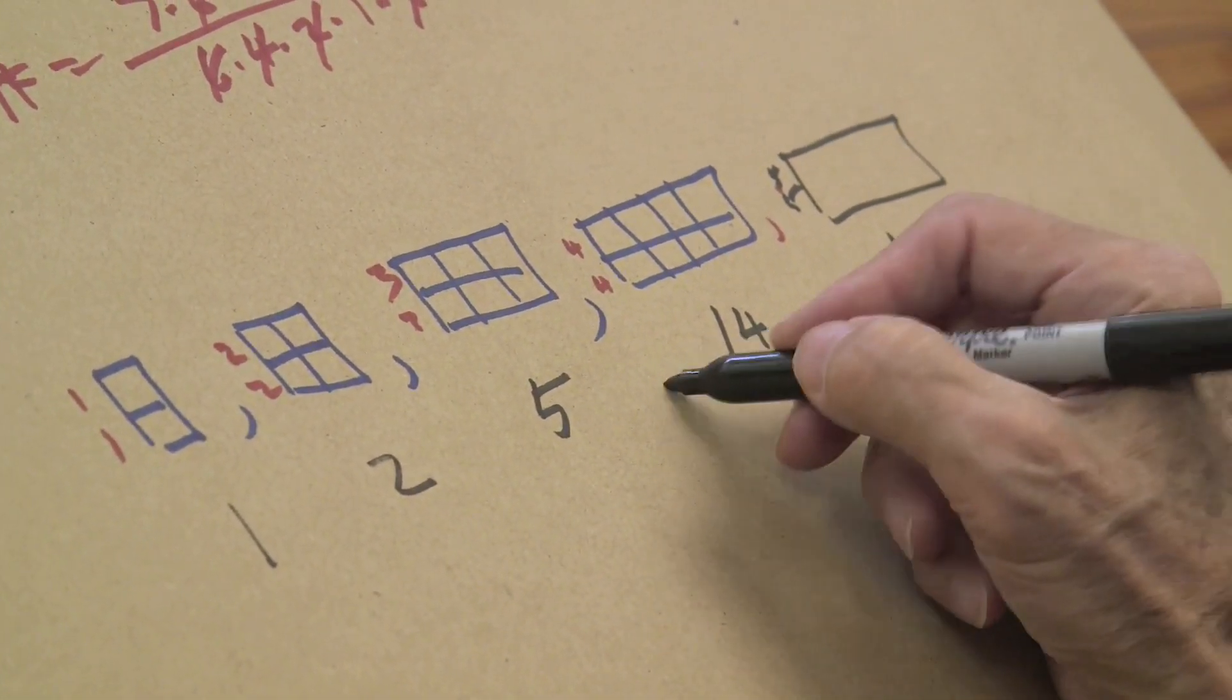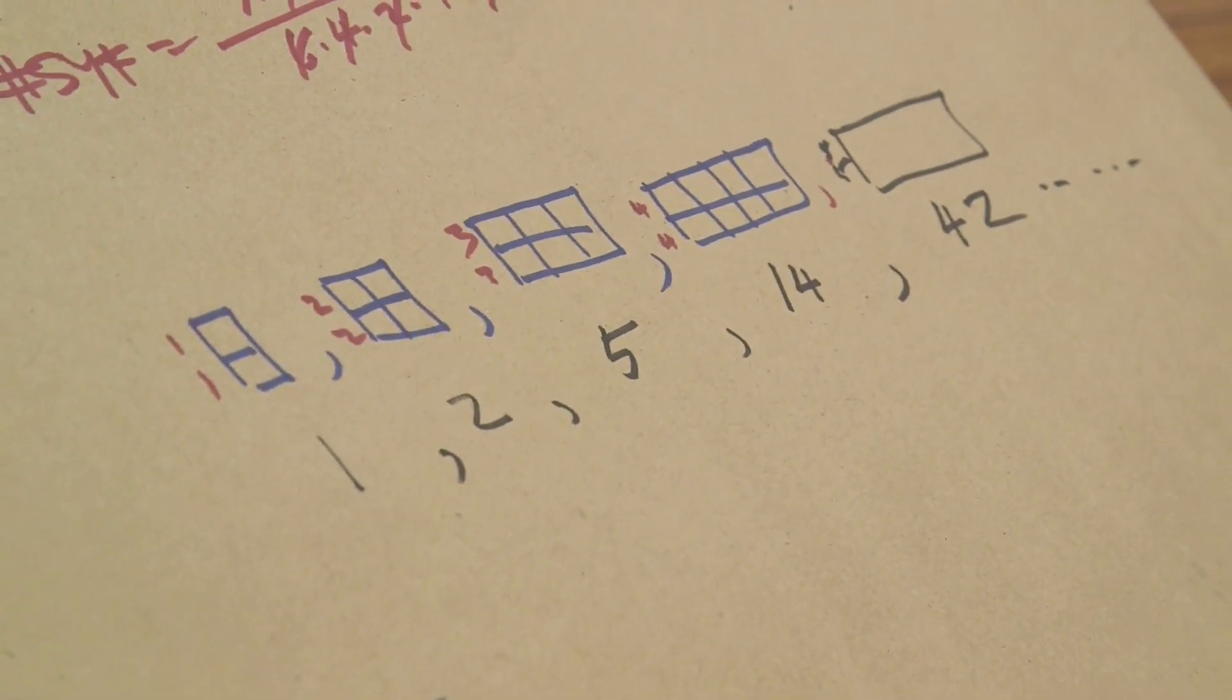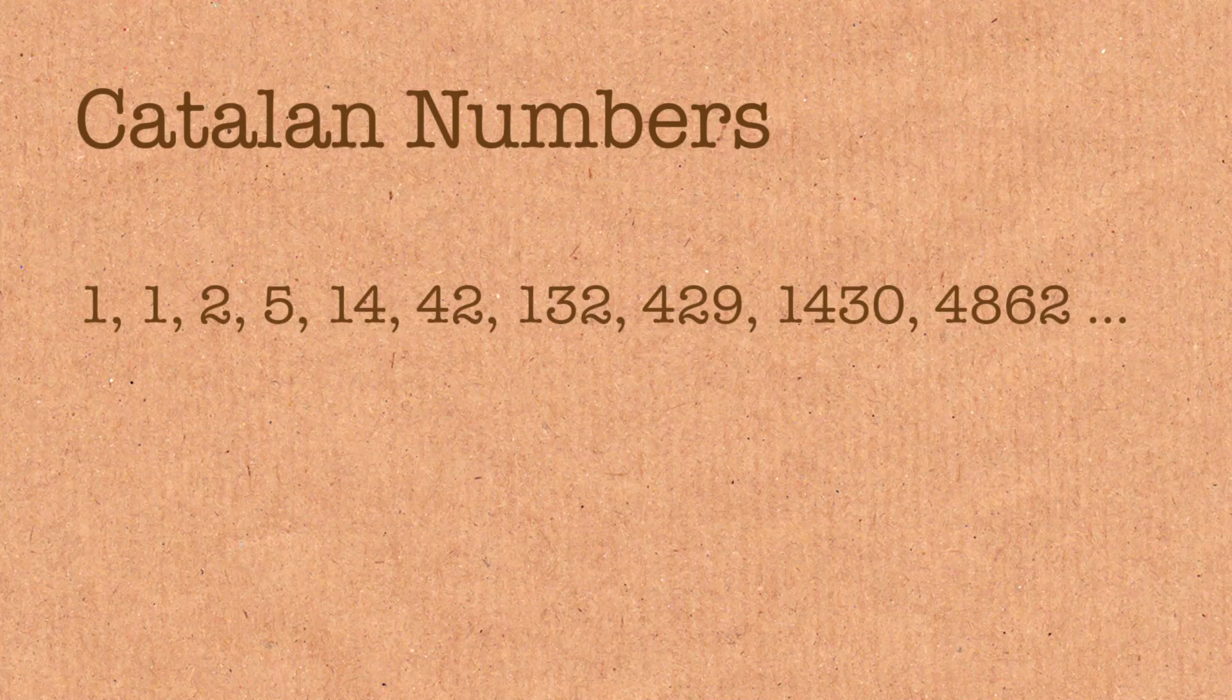And this is a very famous sequence of numbers. If you look it up online, this is a sequence that all combinatorialists know extremely well. It has many interesting and deep properties. They're called Catalan numbers. That's a video for another day.